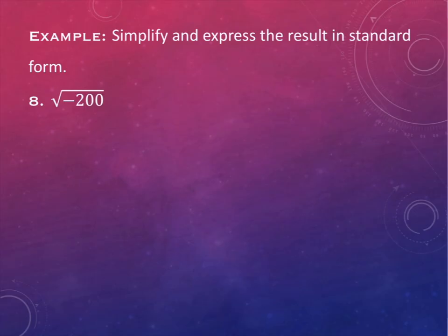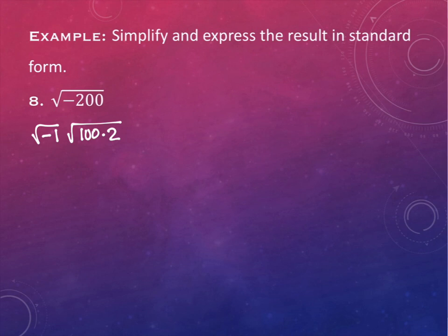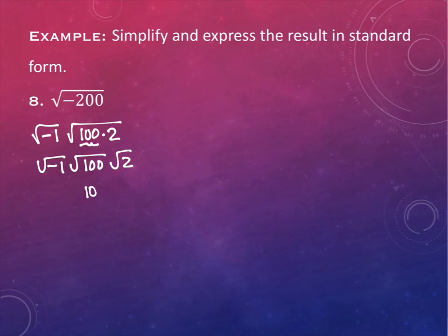One of the ways I'm going to suggest: ask what perfect square divides 200 very nicely. You probably know 100 is — 100 divides 200 very nicely. So I can rewrite this. I'll have my negative 1 out here, and then I'm going to write this as 100 times 2. The square root of negative 1 is i, the square root of 100 is 10, and square root of 2 does not simplify further.